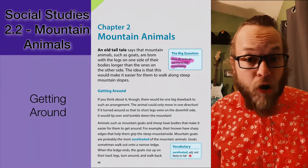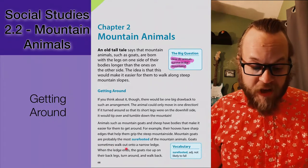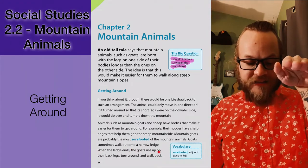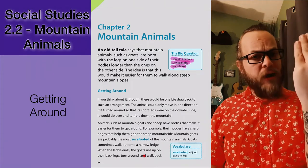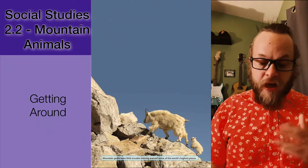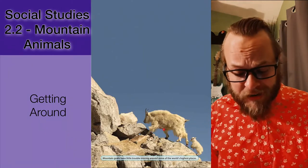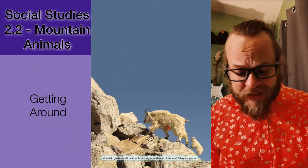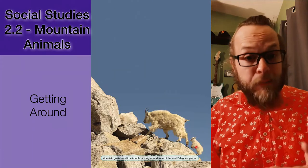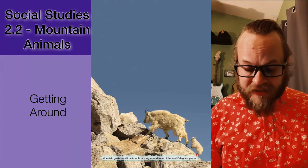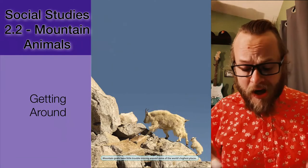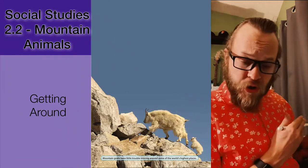Goats sometimes walk out onto a very narrow ledge, and when that ledge ends, the goat rises up on their back legs, turns around, and walks away. Here we have an example of one such mountain goat whose legs on the left side and right side of its body are equally the same length. The young baby goat is up on its back legs, and if it wanted to turn around it could easily pivot on those hooves to turn the other way.